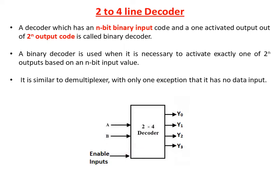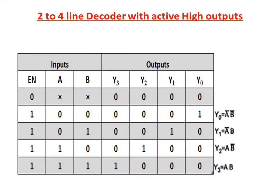This is the diagram for a 2-to-4 decoder. From the name itself we can say the input is 2 and the output is 4. The two inputs are A and B, and the outputs are Y0, Y1, Y2, Y3, along with the enable input. This is the function table for a 2-to-4 line decoder with active high outputs. Active high output means the selected output is represented as logic 1 level.